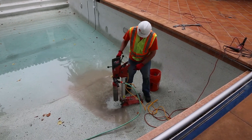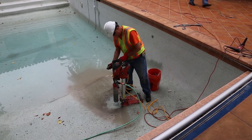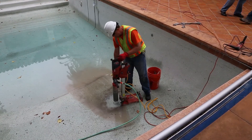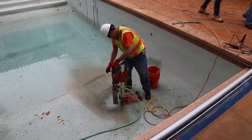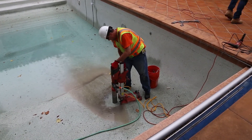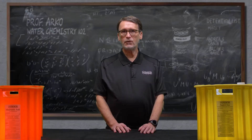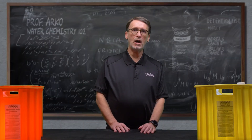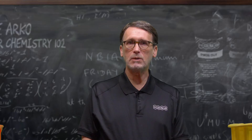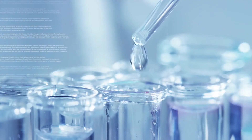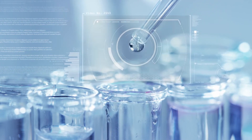Unlike calcium carbonate scale, which forms slowly, once the conditions are right, calcium sulfate can form rapidly and be extremely damaging to surfaces and equipment. Calcium sulfate is also very difficult to remove. Sulfuric acid is sold under the auspice of being safer than muriatic acid because of lower fuming, but by diluting hydrochloric acid to approximately 15%, fuming can be controlled.